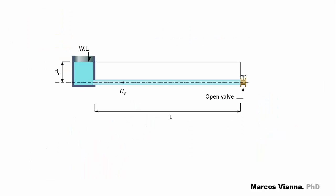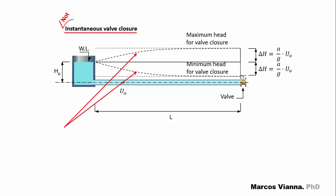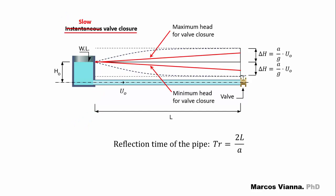When water flows in an installation like this, if the valve is closed instantaneously, the transient pressures, or transient heads, will start to form. If we close the valve more slowly, we can alleviate these transient pressures in a certain extension of the pipeline. But if we close the valve in a time greater than 2L over A — called the reflection time of the pipe — we can alleviate the transient pressures even more. In that case, we say that we have a slow closure situation.